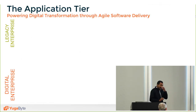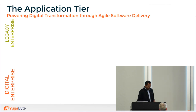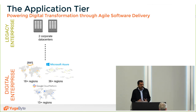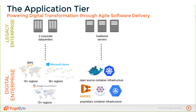On the application tier, a lot of this cloud-native vision is coming to fruition. Data centers are moving from traditional one or two corporate data centers to a plethora of regions available in both public and private cloud. Deployment infrastructure, for efficiency reasons, is going from bare metal deployments to VM-based environments and increasingly to container-managed environments.